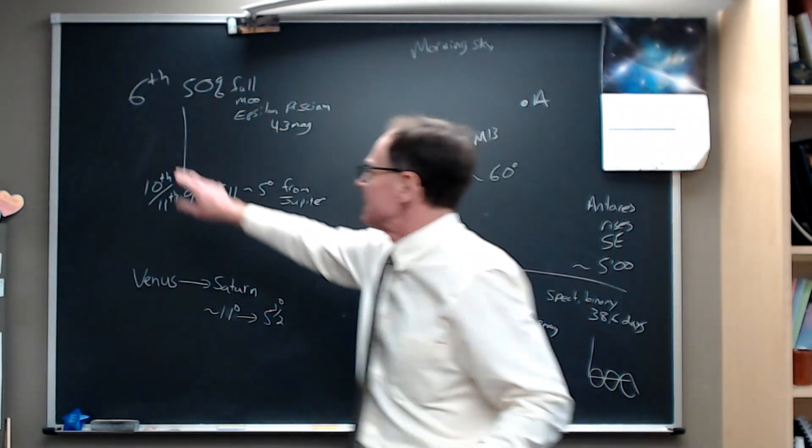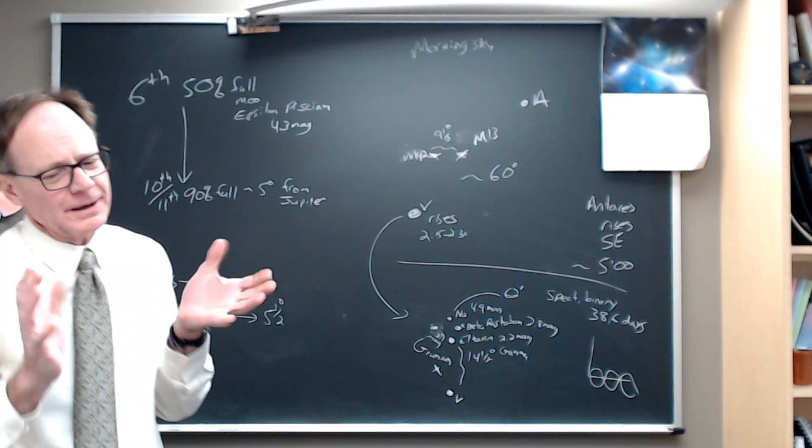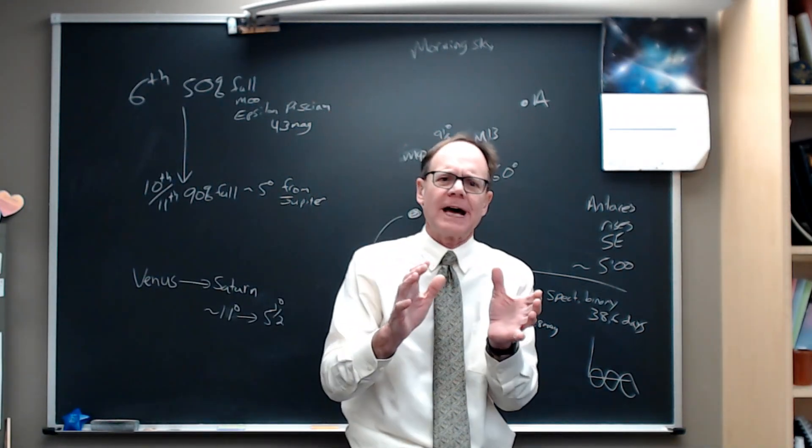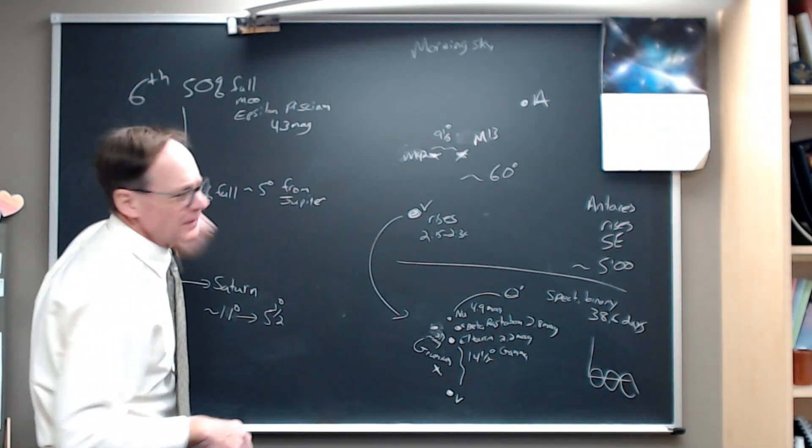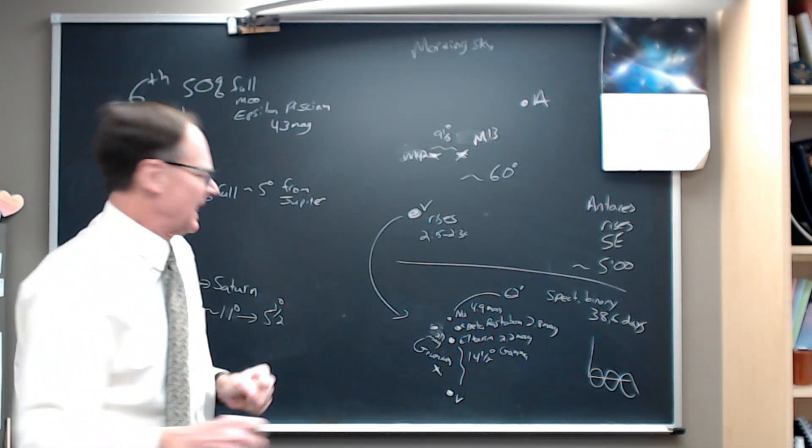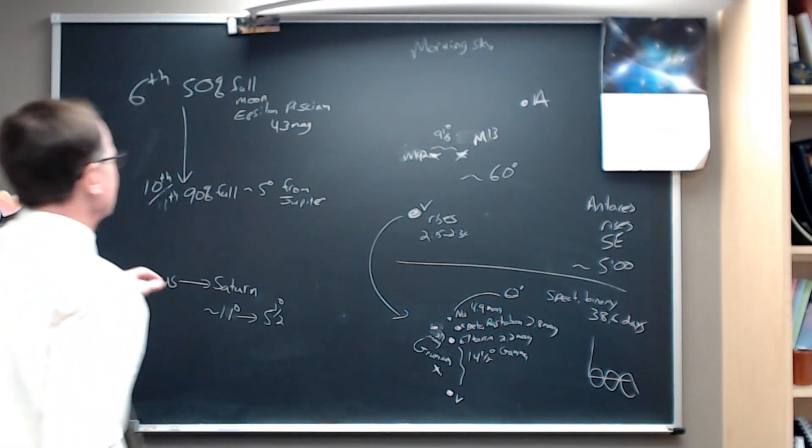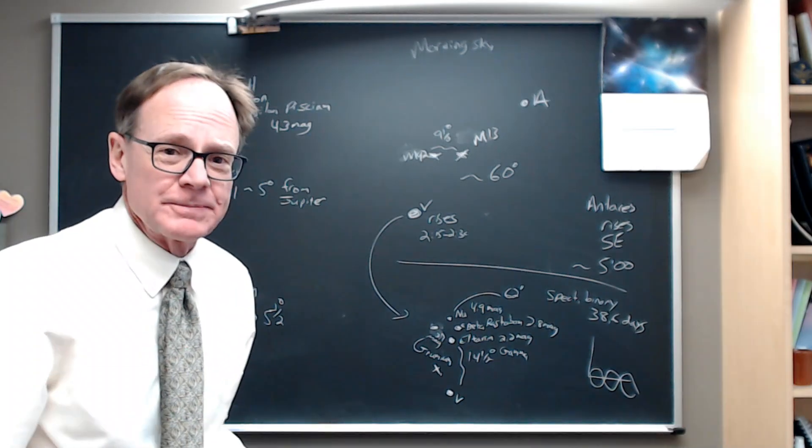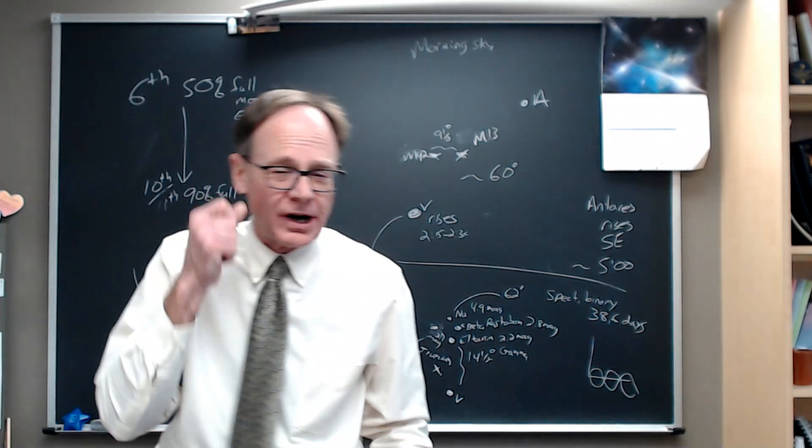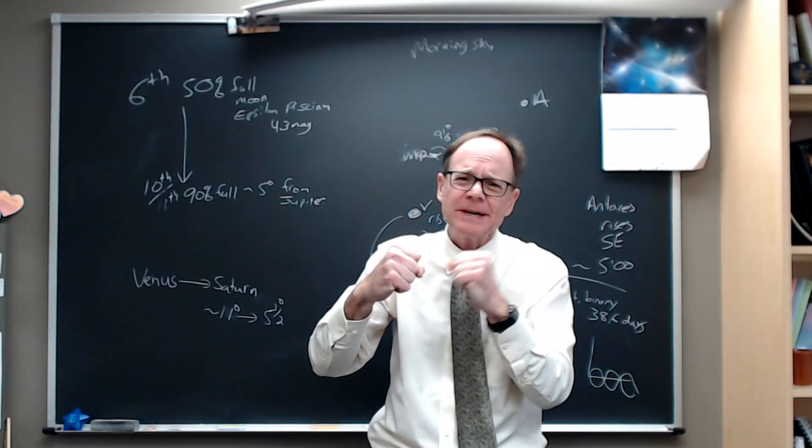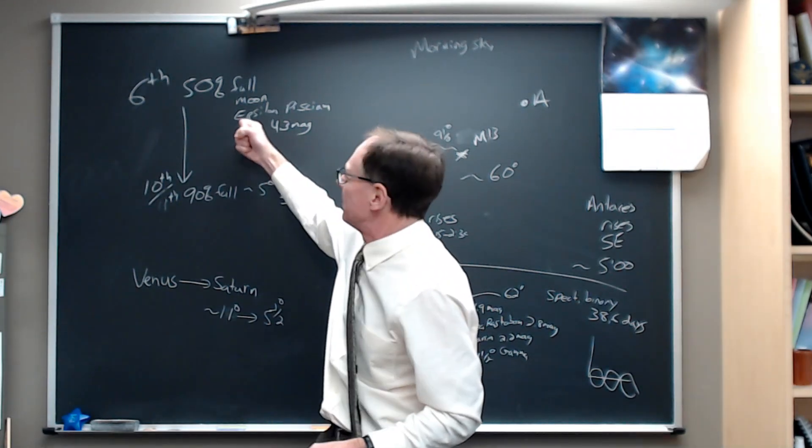The week starts on the evening of the 6th. That's Monday evening. It starts with a half-full moon. So we have a little bit of moon problem this week as the moon starts half-full and heads toward full. But on the evening of the 6th, the 50% full moon slides right by the star Epsilon Piscium. The Epsilon star in Pisces is a 4.3 magnitude star. With the moon that close, it's going to be hard to see that star. Definitely want to use your binoculars, but it should be really close.